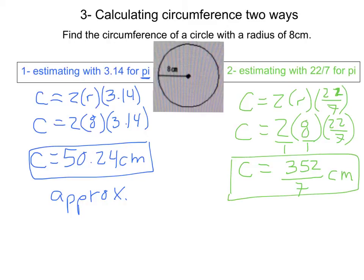As you can see, we'll sometimes be dealing with decimals and sometimes with fractions. We'll let you know which one is expected at a given time, but understand that we can find circumference two different ways by using two different values for pi — whether we want to approximate or have the exact number.